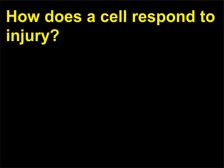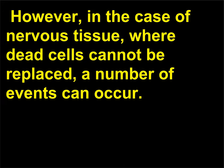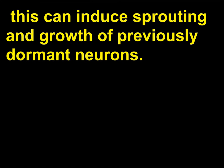How does a cell respond to injury? In most tissues, injured cells die and are subsequently replaced. However, in the case of nervous tissue, where dead cells cannot be replaced, a number of events can occur. Nerve growth factor is produced by adjoining neurons, which can induce sprouting and growth of previously dormant neurons.